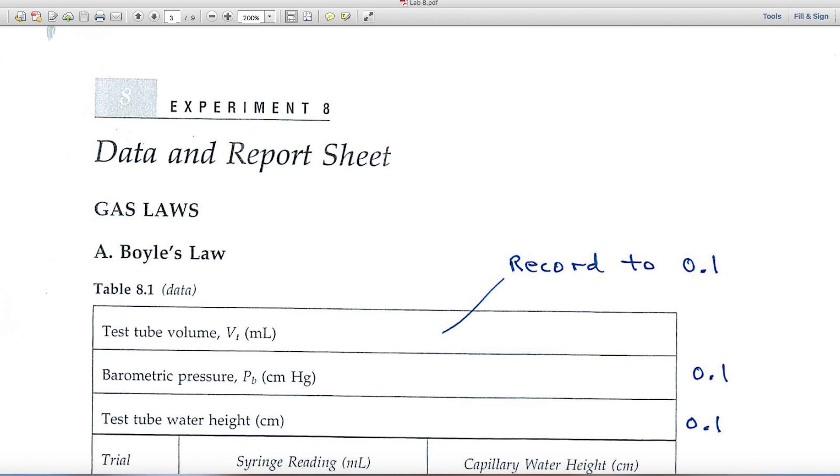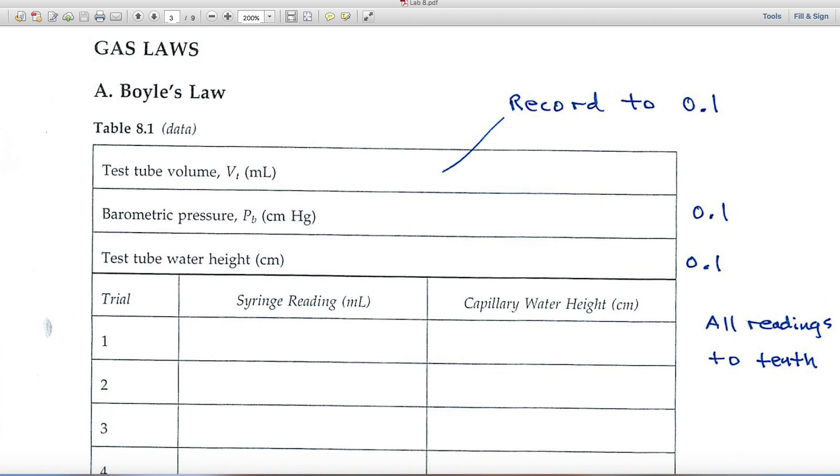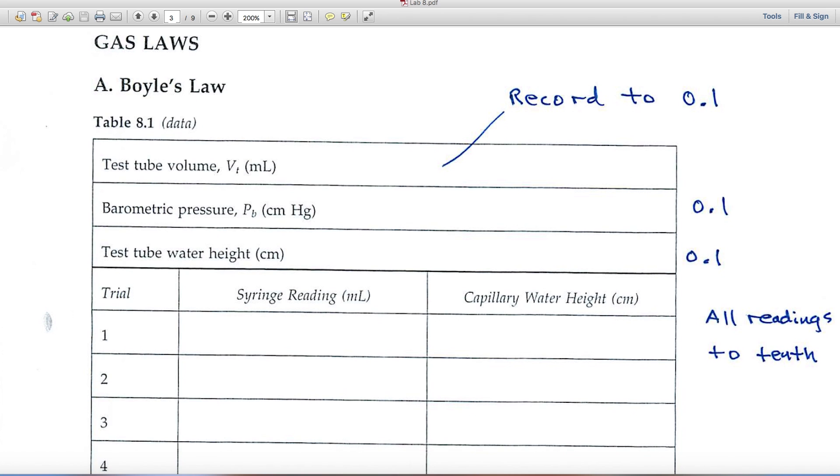And here are the data and report pages now. In part A, we look at Boyle's Law and you'll be gathering volume data. The test tube volume data, first of all, because you're using a graduated cylinder, you'd want to record to the tenth.